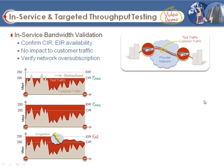In the lab video today, we're going to go through four different throughput testing scenarios. First, we'll show how to use this feature to test a committed information rate of a service, even if customer traffic is bursting or irregular during the test. We'll also show how to test the excess information rate of a service, and then introduce an impairment into the traffic flow to show how customer traffic remains unaffected while test traffic is dropped first.